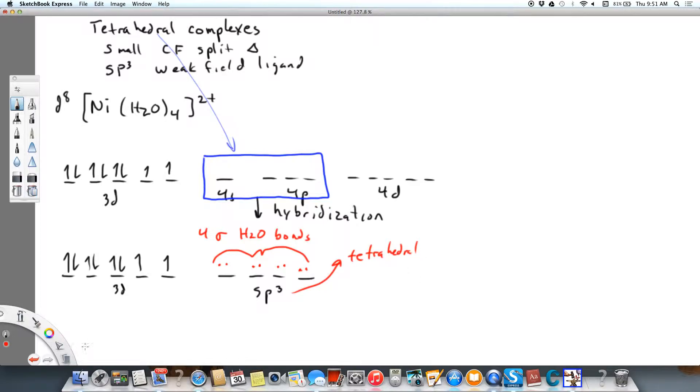Now we want to look at the crystal field diagram. This is our valence bond diagram. Let's look at the crystal field diagram. They need to match, meaning how the electrons are arranged.